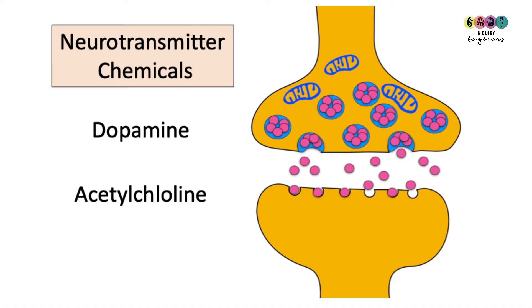There are many neurotransmitter chemicals. You have to know some examples, so dopamine and acetylcholine. Make sure you remember those.